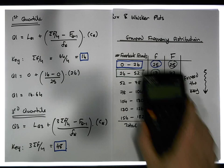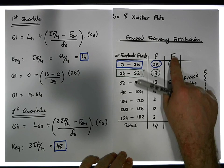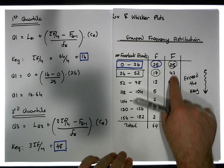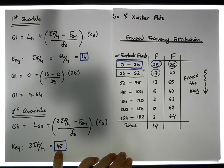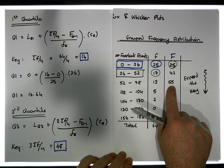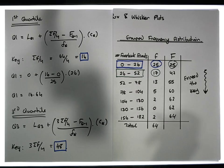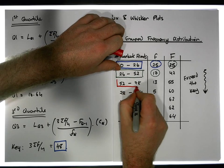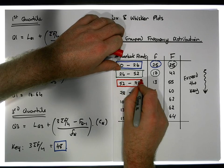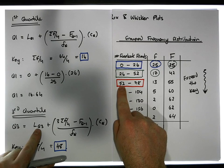To find our third quartile class, we go down through the cumulative frequency to find the first cumulative frequency that exceeds 48. The first one that exceeds it is 55, so this class is the third quartile class, which means that 52 is its lower bound.